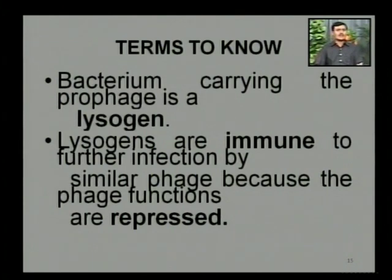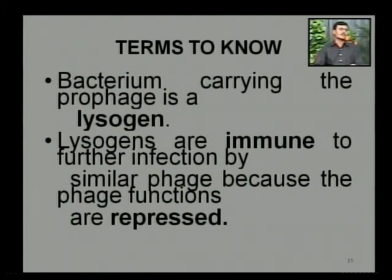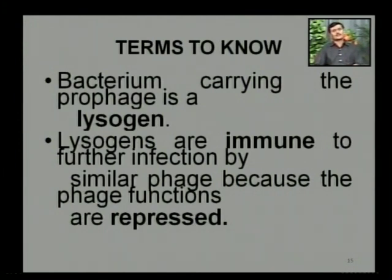Lysogens have an important property: once any bacterial cell is infected with a bacteriophage, it will become immune to further infection by a similar type of phage, because their functions are repressed. Once a bacterial cell is infected with a single type of bacteriophage, that same bacterial cell cannot be infected with similar types of phages.